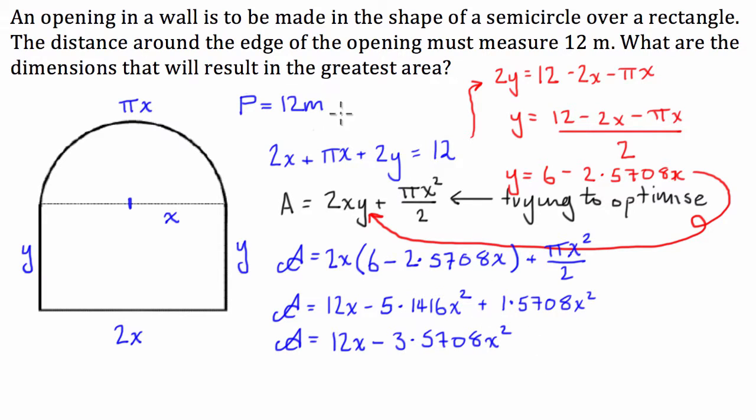Now, to find the dimensions that will result in the greatest area, we have to differentiate this. So we're going to take our dA dx, and that's going to be equal to, well, a constant, 12 minus, 3.5708 times 2, 7.1416.